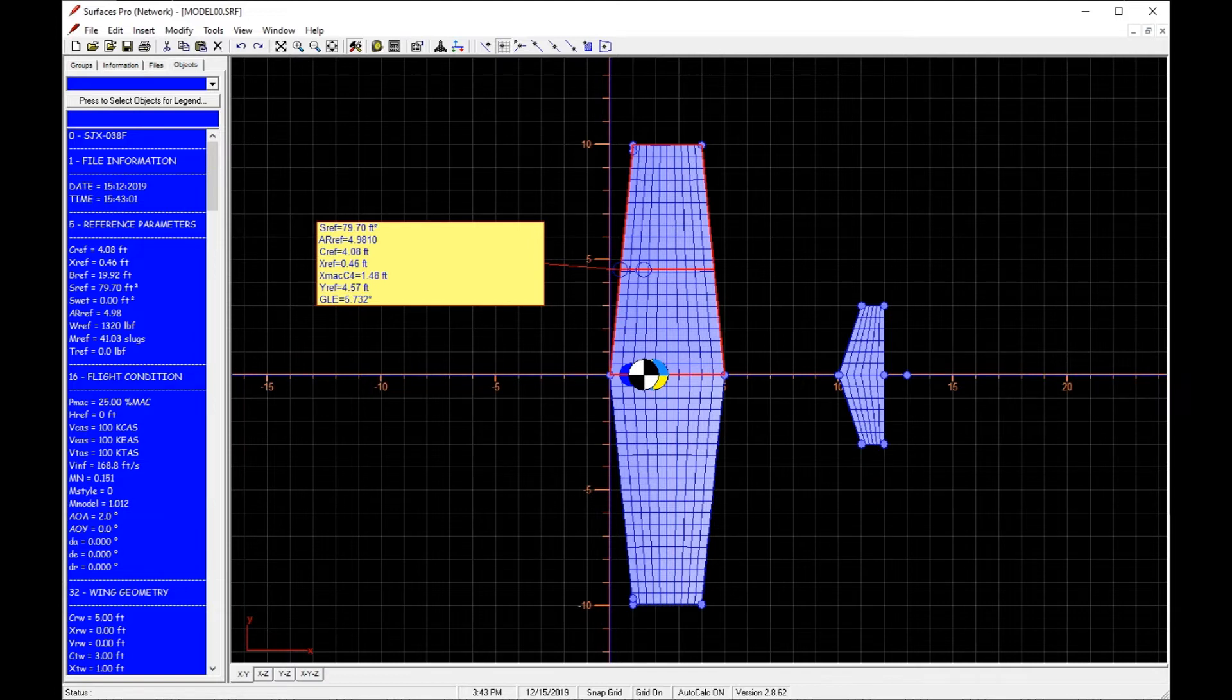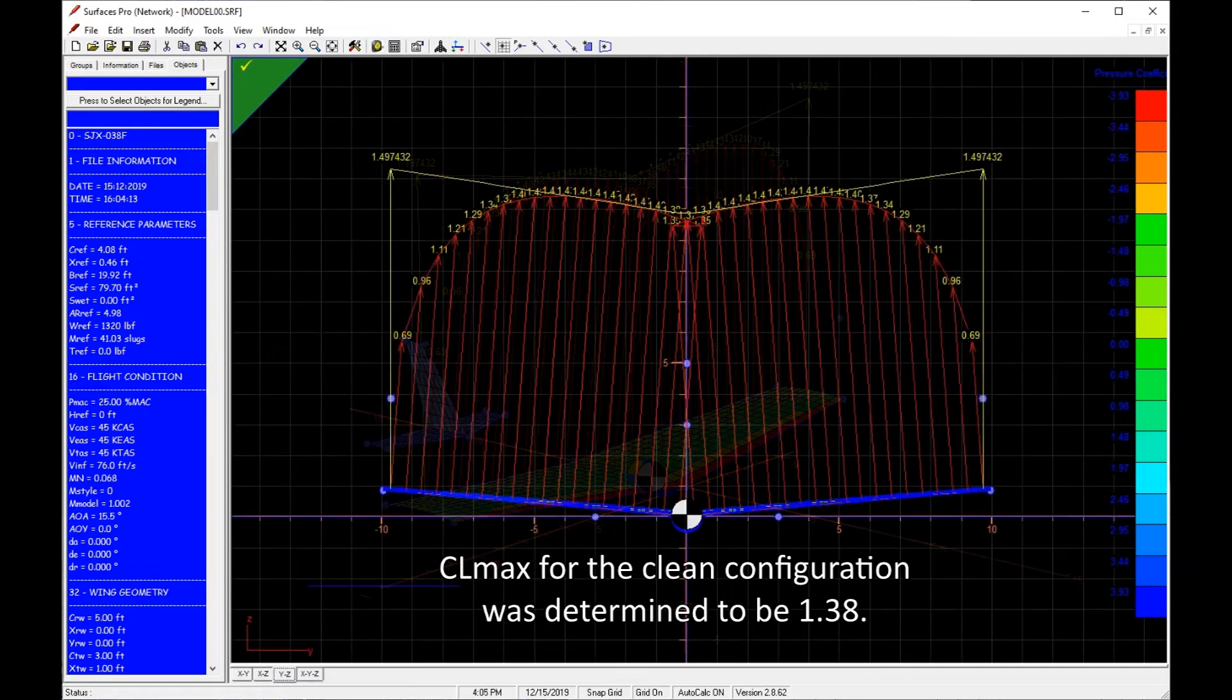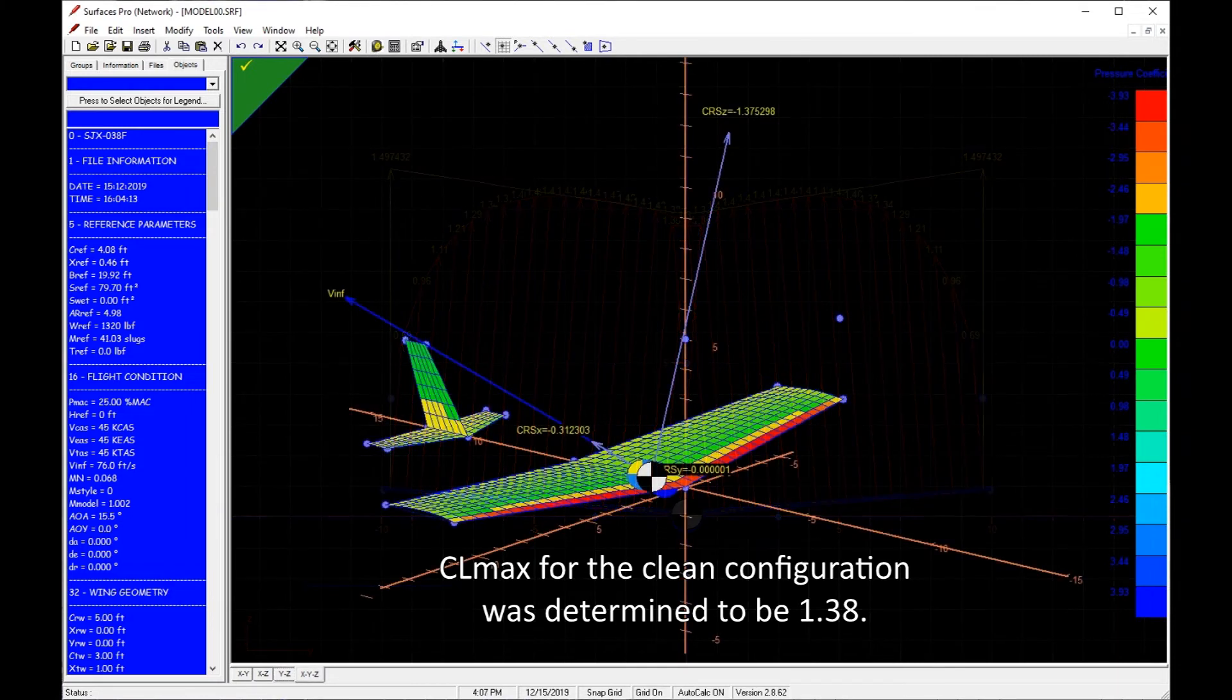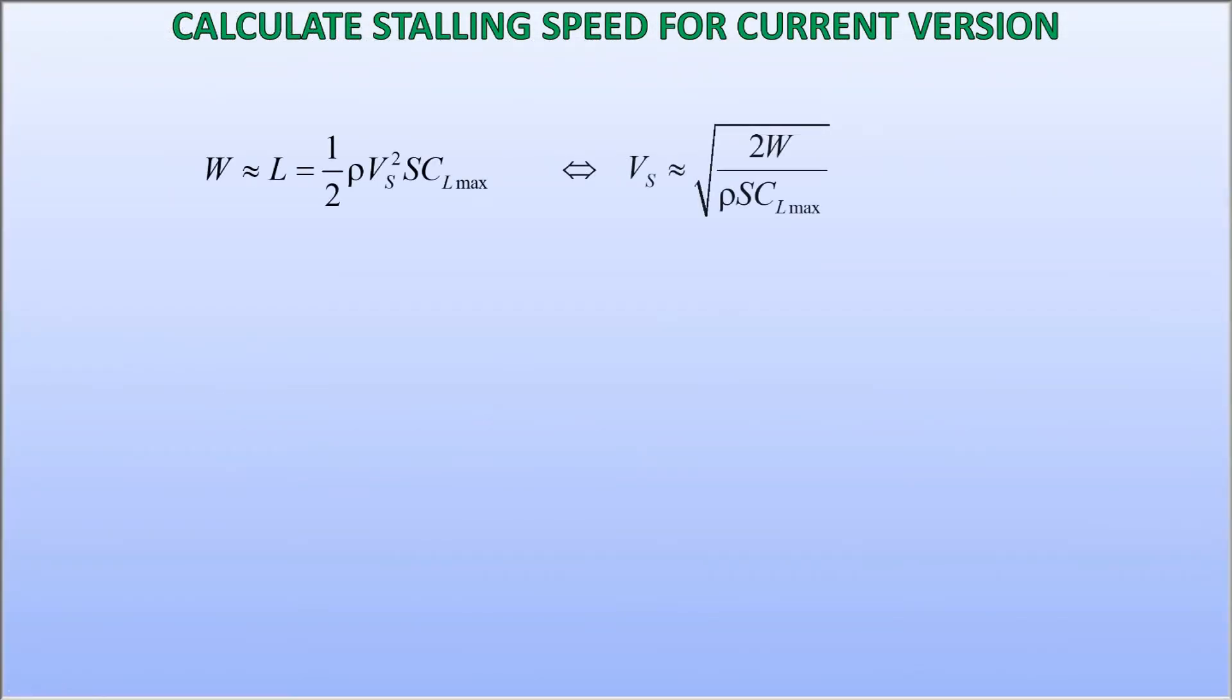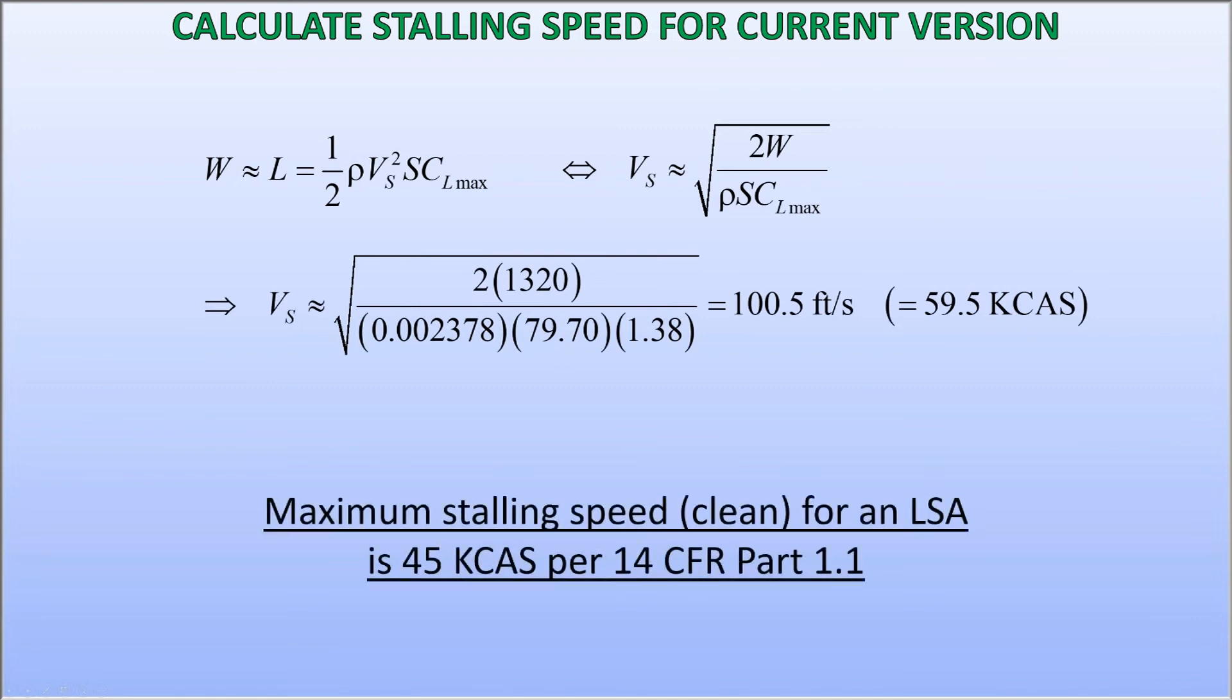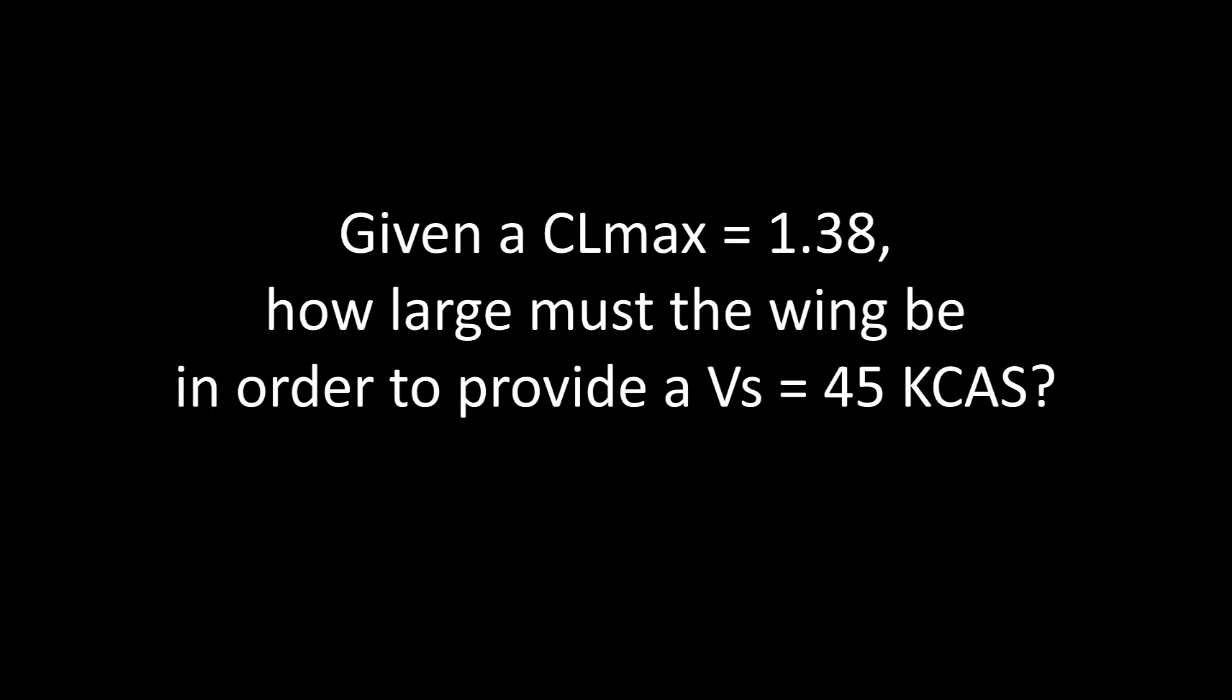First, let's consider the stalling speed. The maximum lift coefficient for the failed design was determined in part 3 of this video series, and found to be 1.38. Using this with the lift equation, where I'm shooting for a gross weight of 1320 pounds, it is easy to show that the resulting stalling speed will be 59.5 kcats. But I can transform the question and ask, given a CL max of 1.38, how large must the wing be in order to provide a stalling speed of 45 kcats?